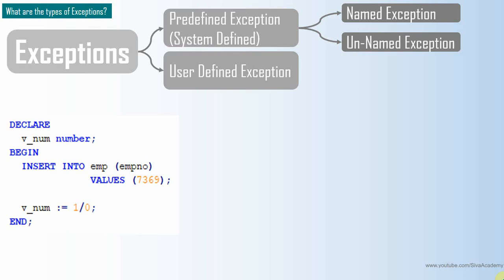It is very important to know the name of an exception because whenever we want to handle exceptions, we handle them by specifying the name in the exception handling section. For unnamed exceptions, since they don't have a name, we will not be able to handle them directly by name, so by default we handle them in the OTHERS section.